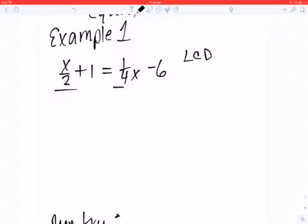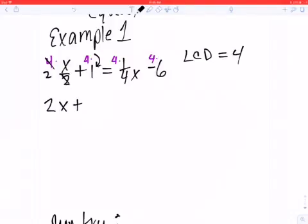So the least common denominator for 2 and 4 is going to be 4. So I'm going to multiply all of the individual little terms in this equation by 4. Remember to keep the equation balanced. If you multiply some things by 4, you've got to do everything by 4 so that it stays balanced. So if I do that, I've got a 4 that is going to cancel out with this 2, and it's just going to make it a 2 times x. So I'm going to write 2x.